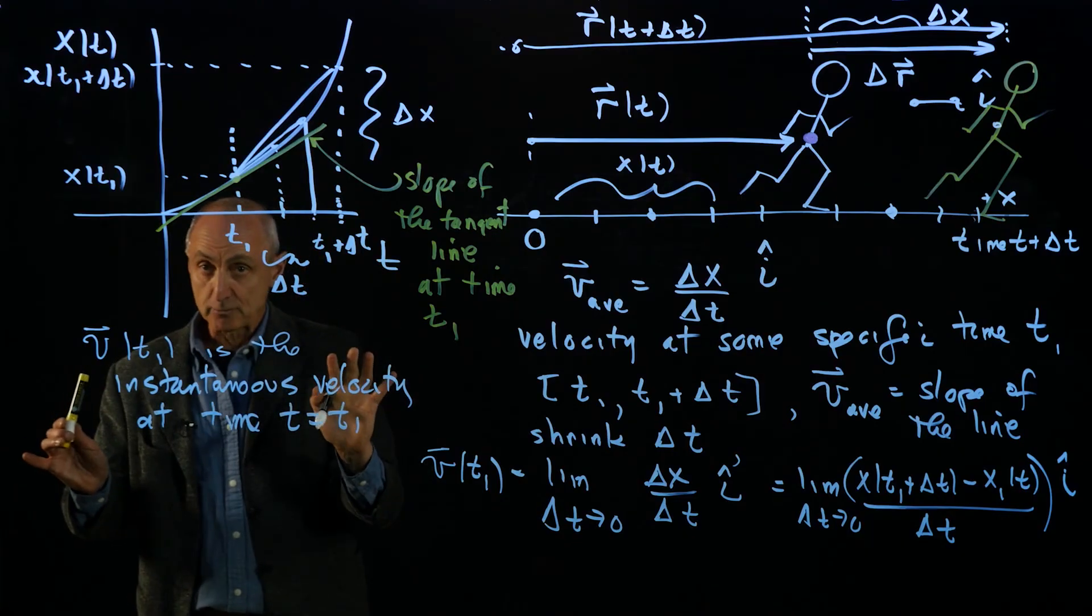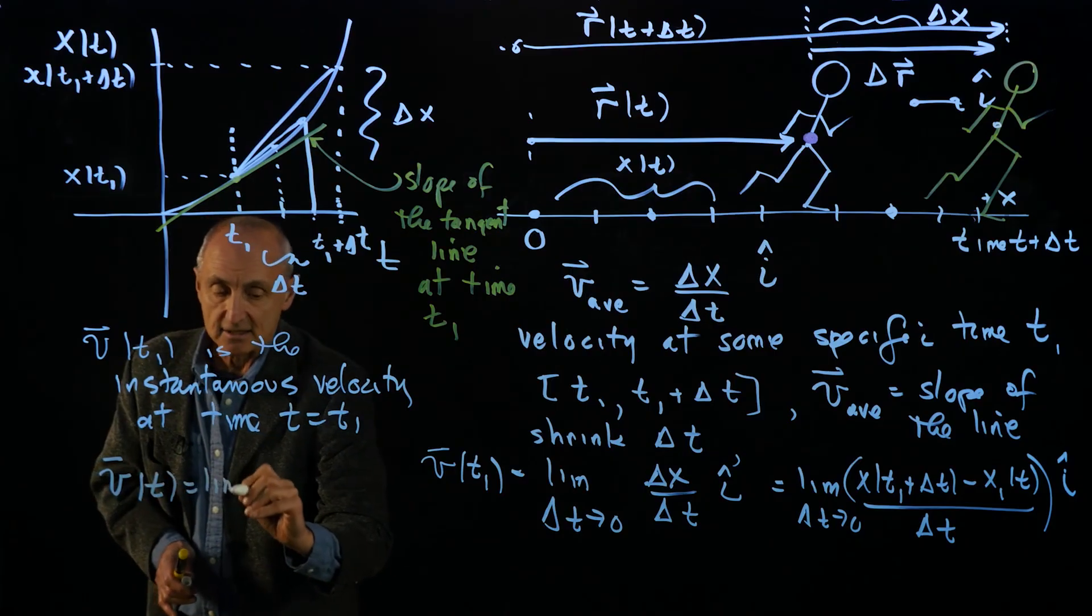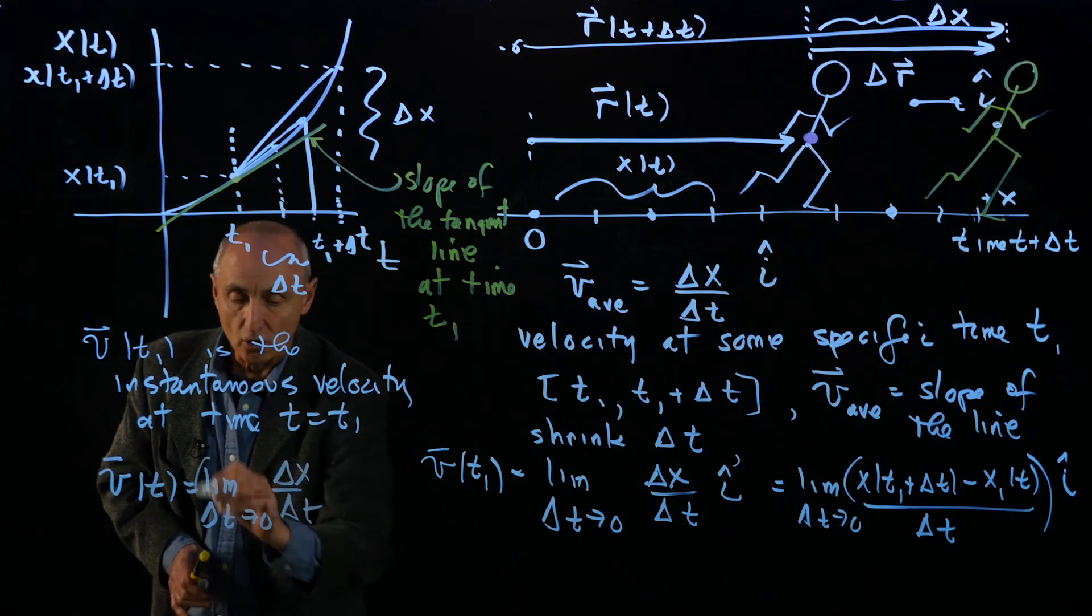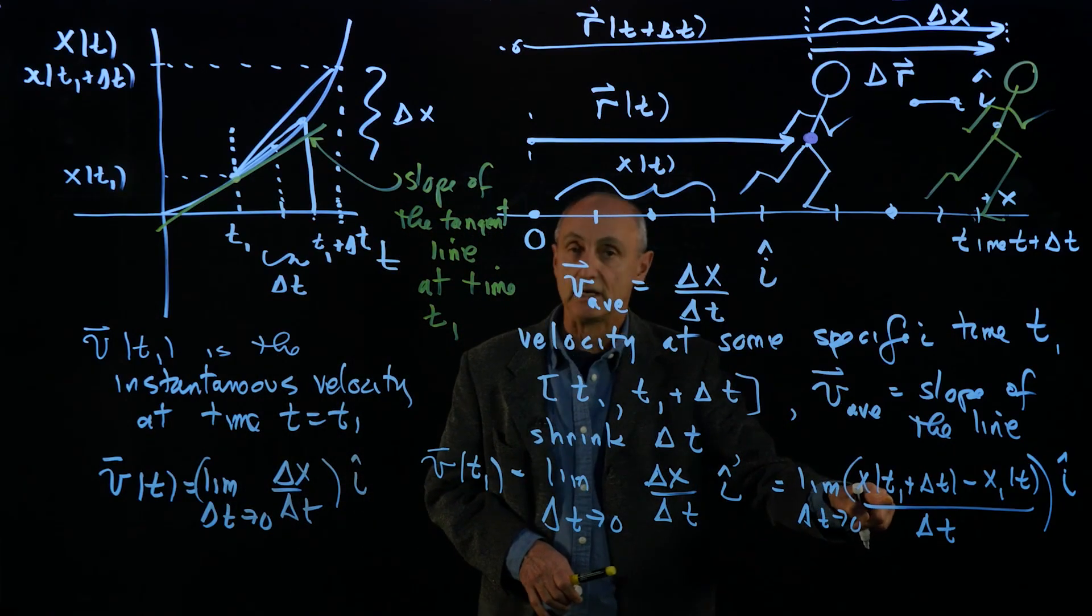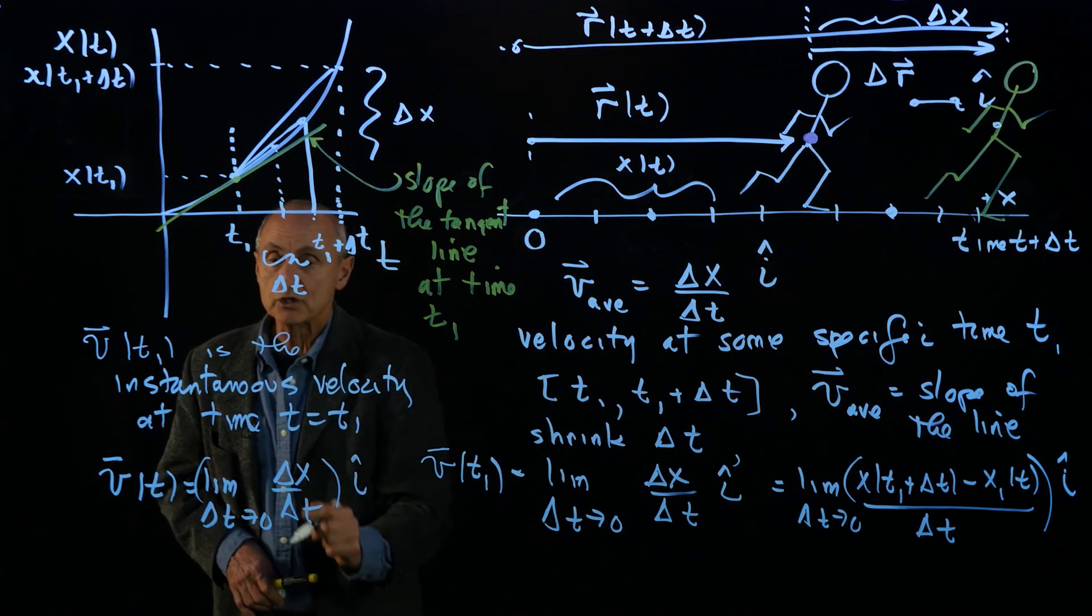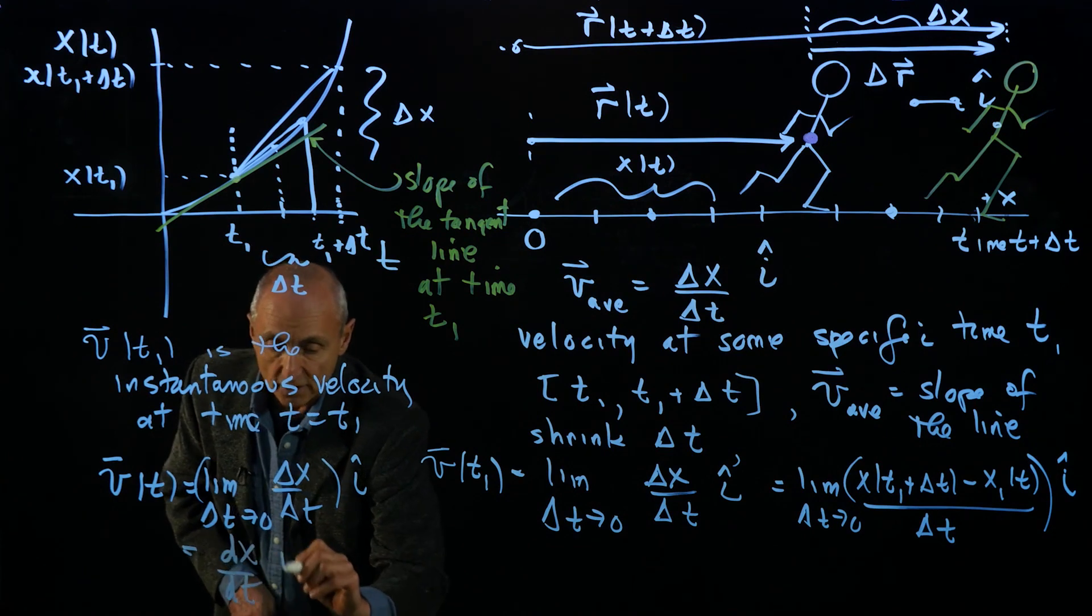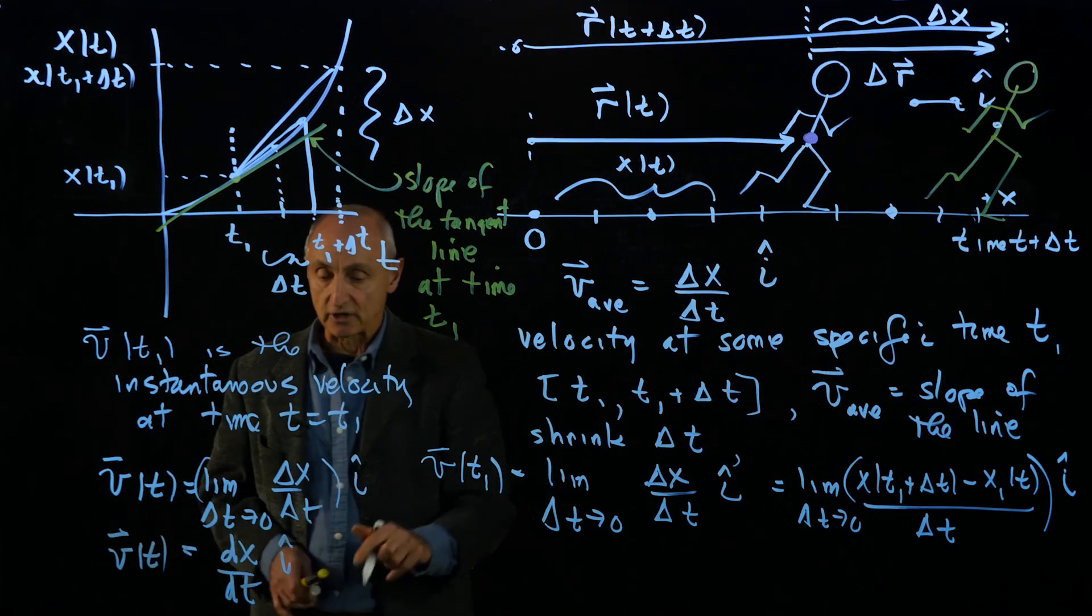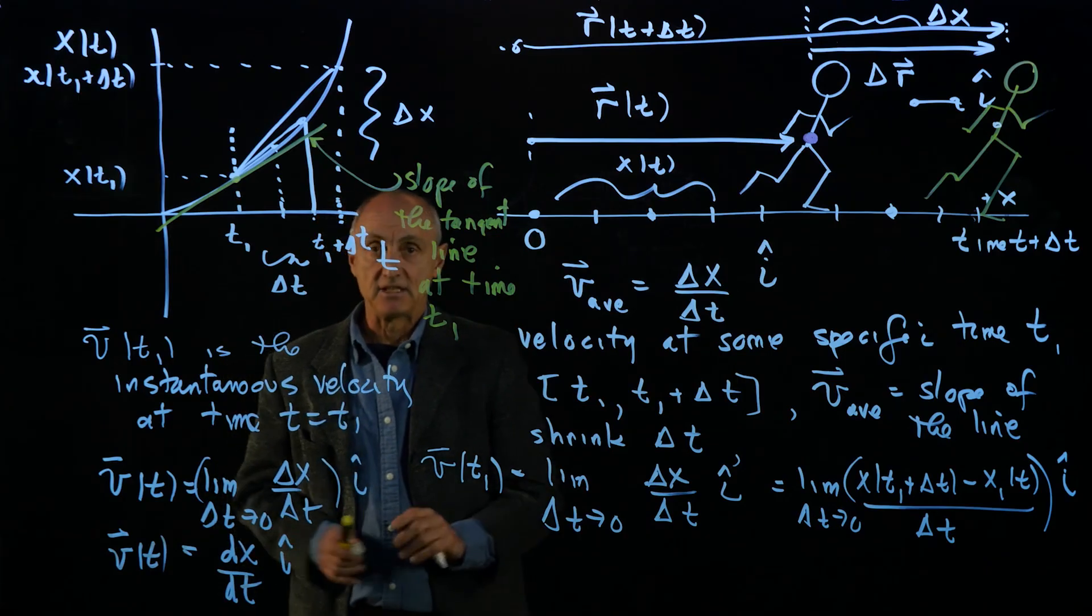If we were now being a little bit more general, we could just say that v at any time t is the limit delta t goes to zero delta x over delta t, all direction i hat. And the only thing here is we're no longer considering t1, but an arbitrary time t. This quantity, the limit, is awkward to write every time. It has a name. And that's precisely what we call the derivative of the position function. So our instantaneous velocity is the time derivative of the position function at any instant in time.